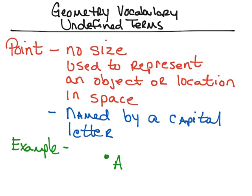The first undefined term is what we call a point. A point has no specific size, and it's used to represent an object or location in space. We usually name a point using a capital letter. For example, I've named this point capital A, or it could be capital B. Remember, it has no actual size, and we use it to represent the object's location in space.